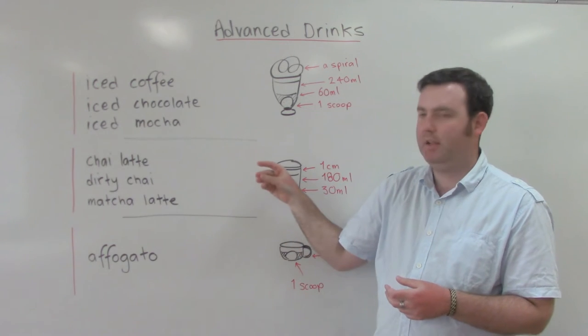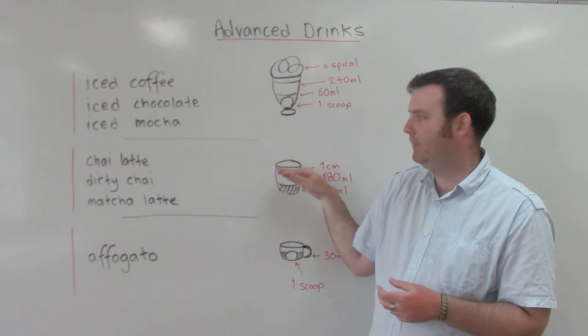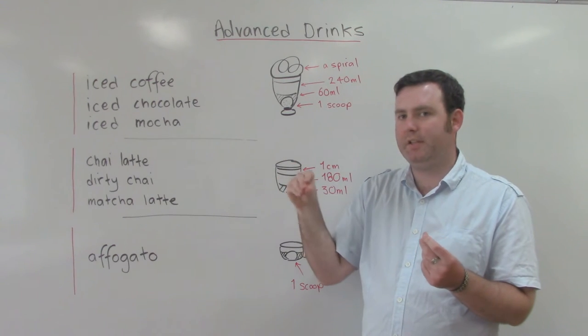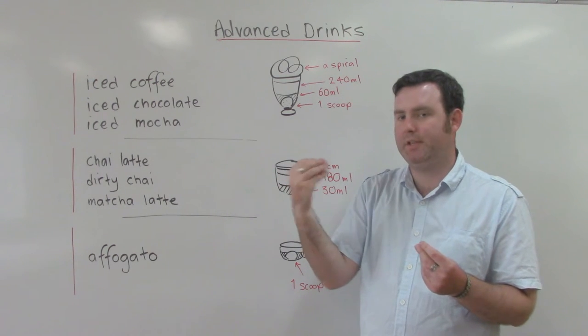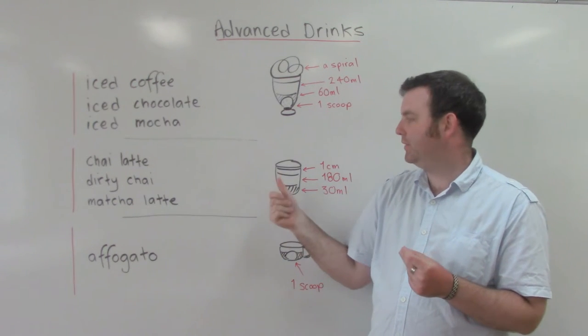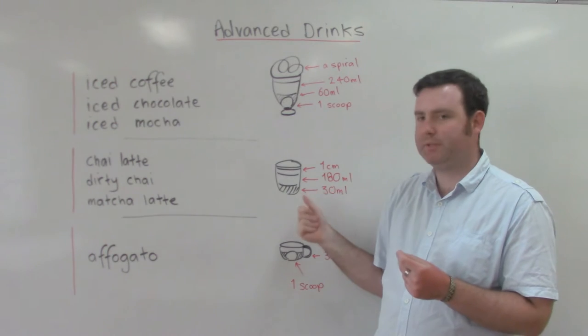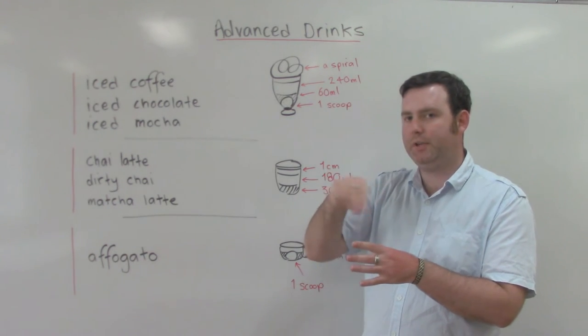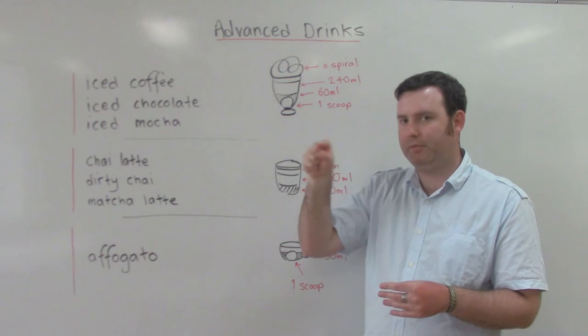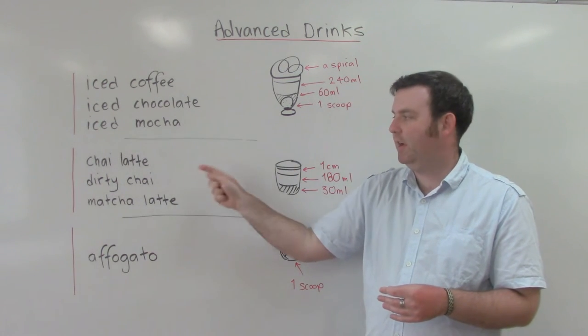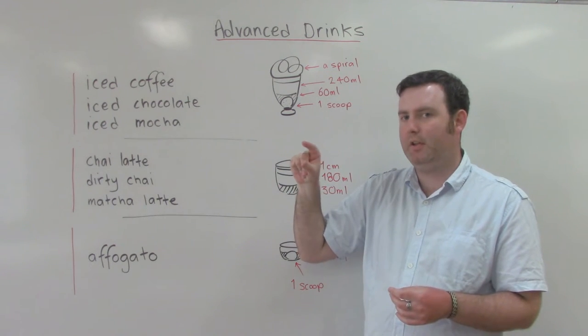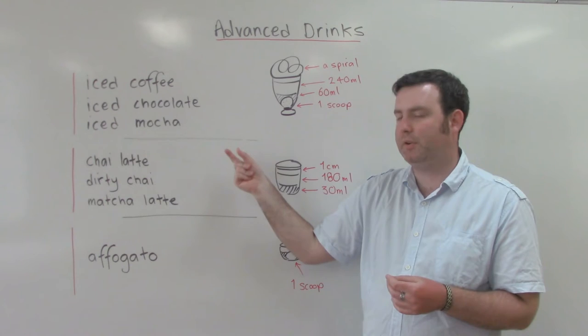A chai latte is a normal latte, except we have chai powder. So chai is black tea and spices together. It's from India, and we have the chai powder mixed with 30ml of hot water, and then we have 180ml of milk and a centimeter of foam on the top. A dirty chai is the same as this, except we have an extra shot of coffee, normally espresso coffee.